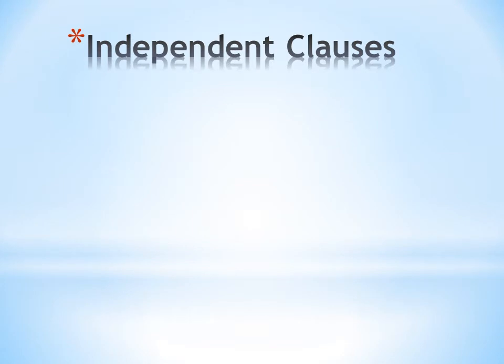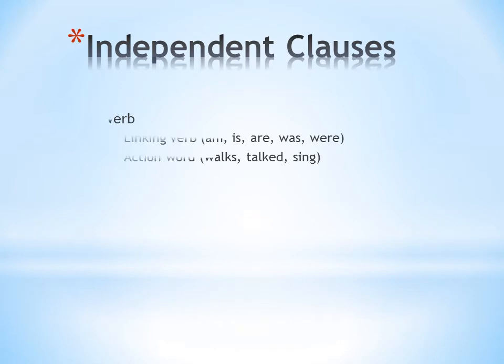Before you can understand this comma rule, you need to understand independent and dependent clauses. Independent clauses are complete sentences. They have a verb, which can be a linking verb. The primary linking verbs are am, is, are, was, and were.